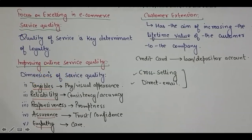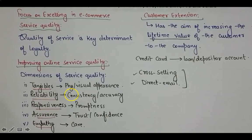Generally, service quality can increase customer loyalty through five dimensions. Tangibles refer to the physical or visual elements of the service. Reliability refers to consistency and accuracy of the product or service. Responsiveness means giving customers a proper response and feedback on their orders or queries. Assurance means building confidence and trust in customers about the company.